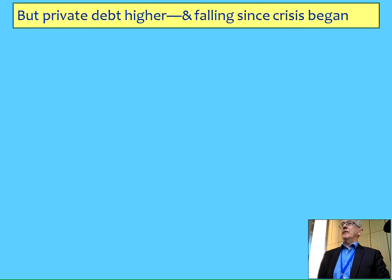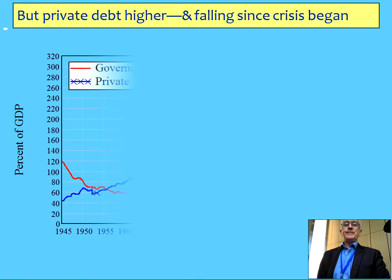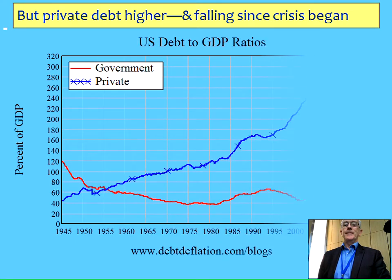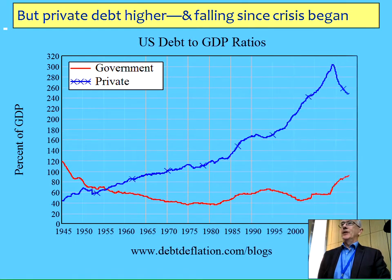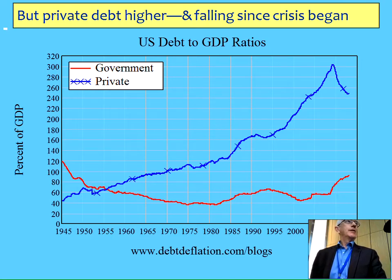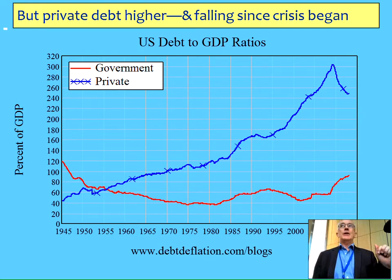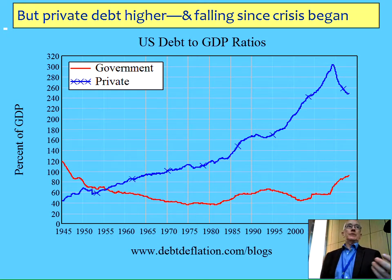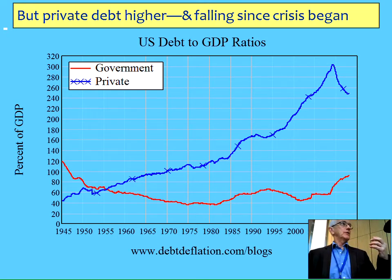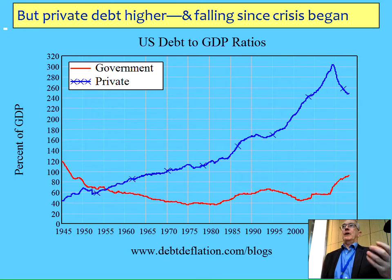But when you include private debt as well, the picture changes somewhat. Yes, public debt's rising, but it's far smaller than the level of private debt. And in fact, the crisis began around about the time that private debt started to fall, and the rise in public debt came afterwards. So simply looking at this empirically, you have to ask which one matters, what's driving what.